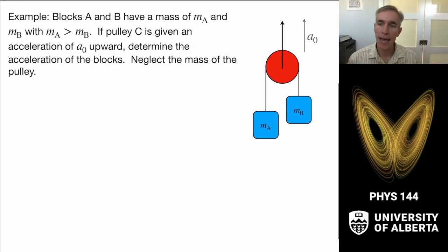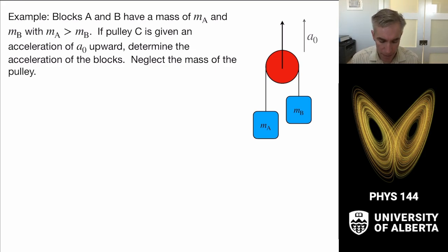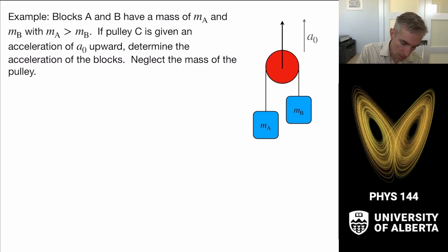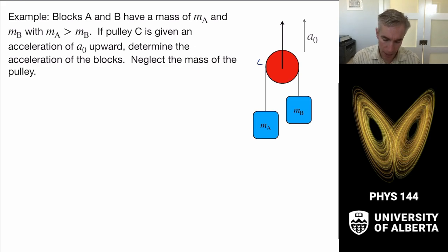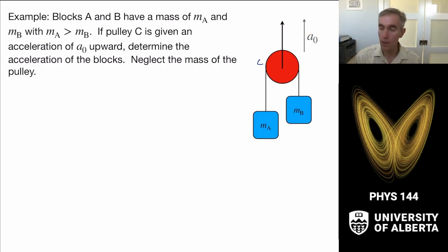What happens if I have a system where blocks A and B have masses A and B respectively, with A greater than B? Pulley C is given an upward acceleration A₀, with massless ropes and a massless pulley. I'd like to know what the accelerations of the blocks are.